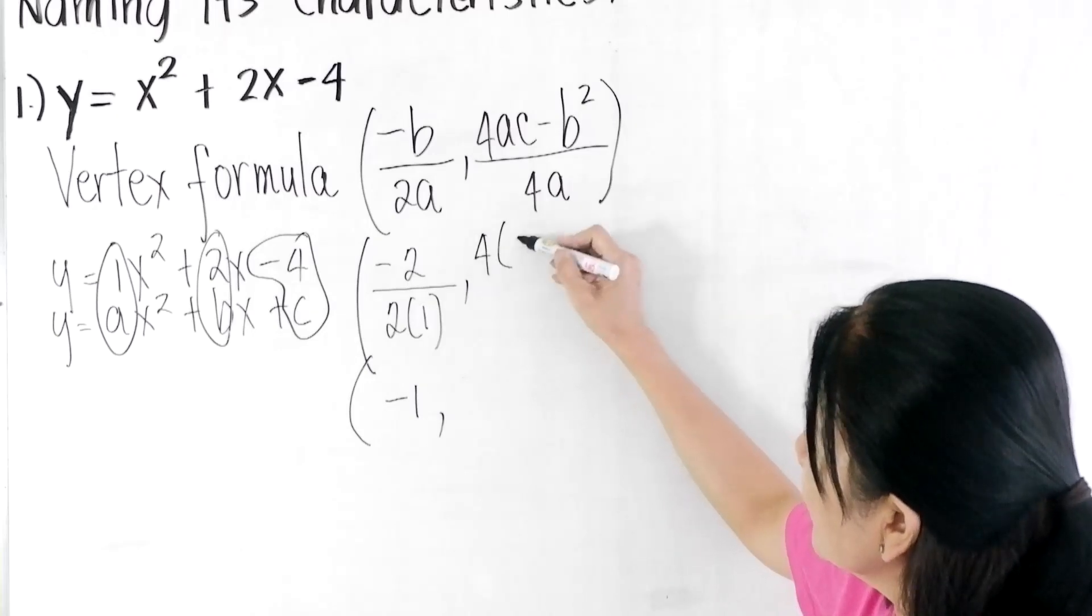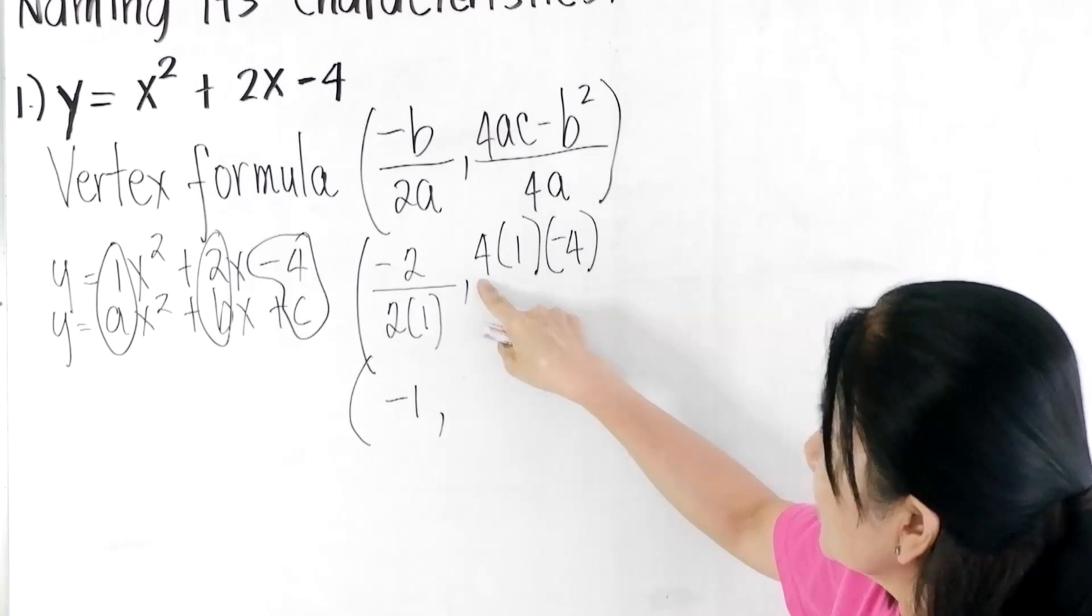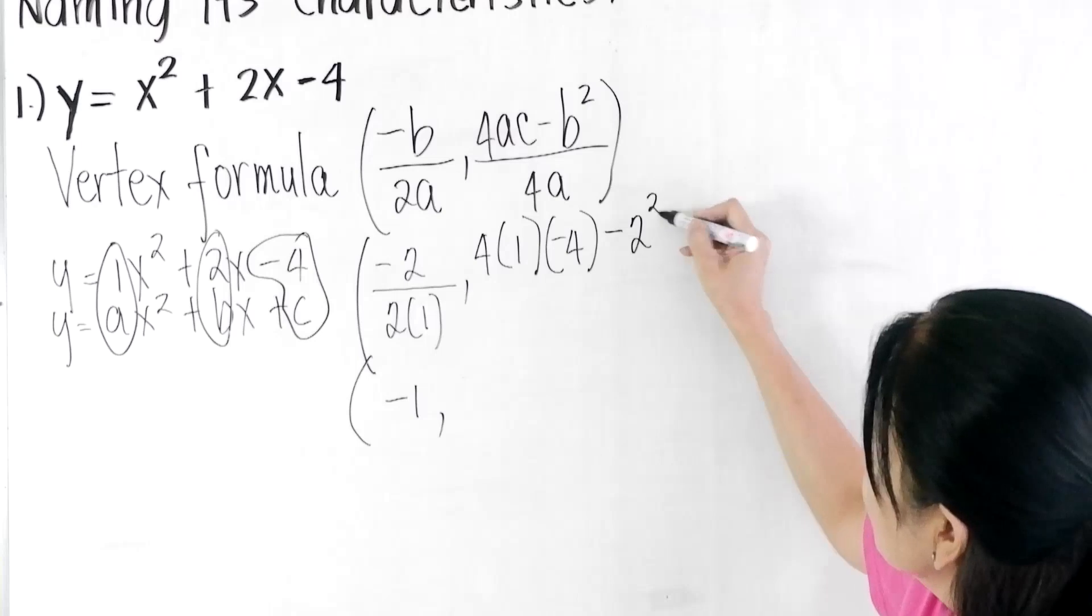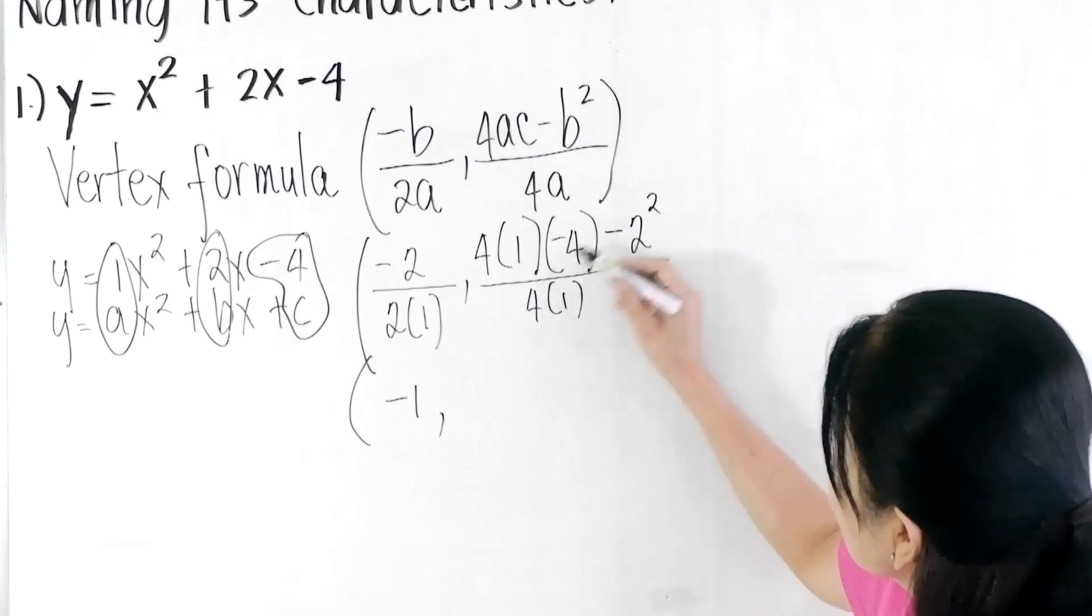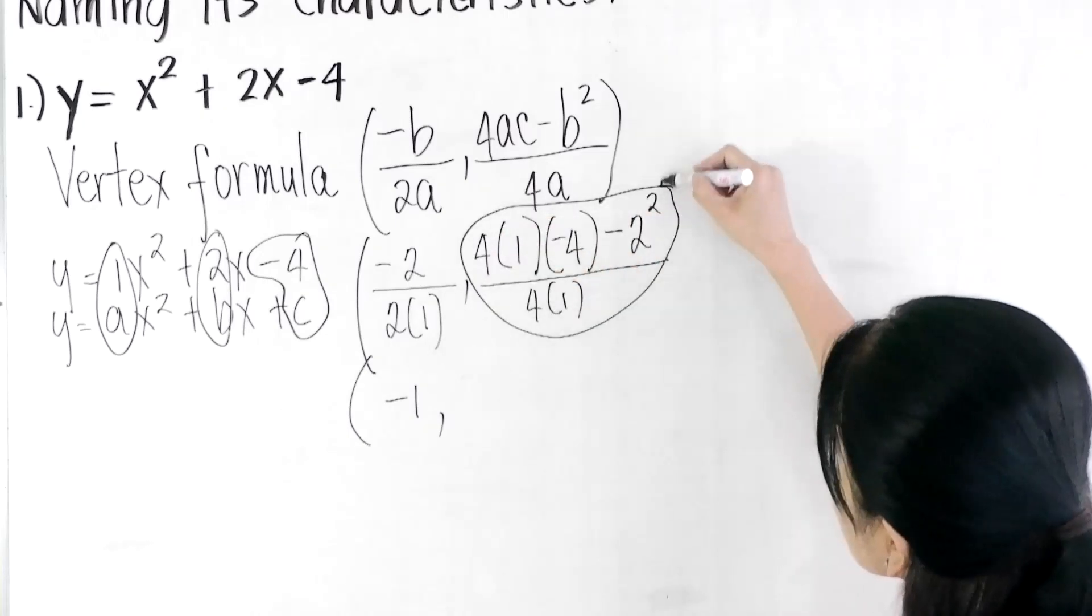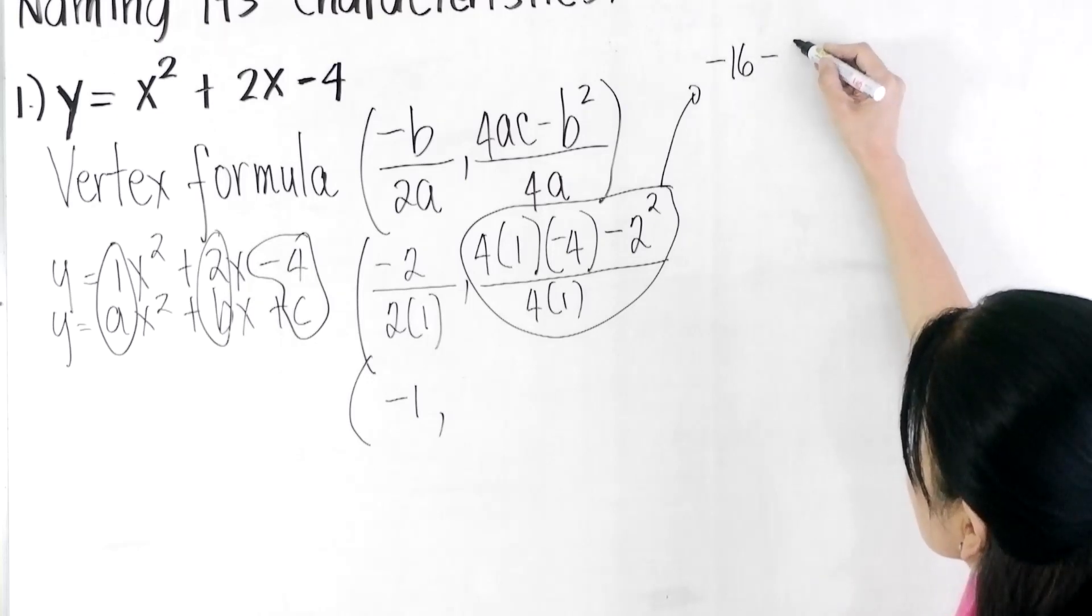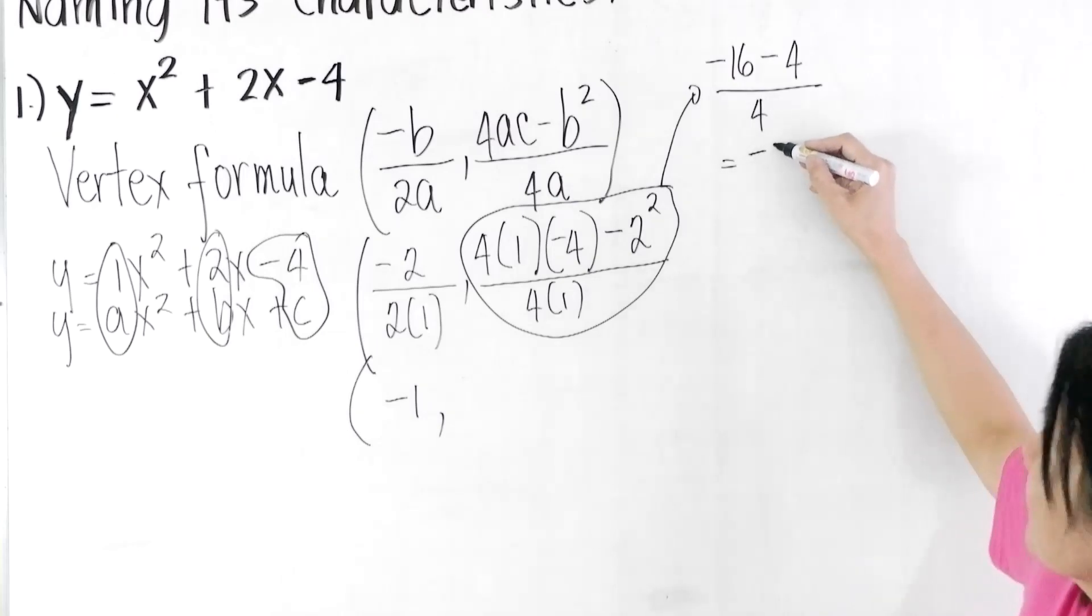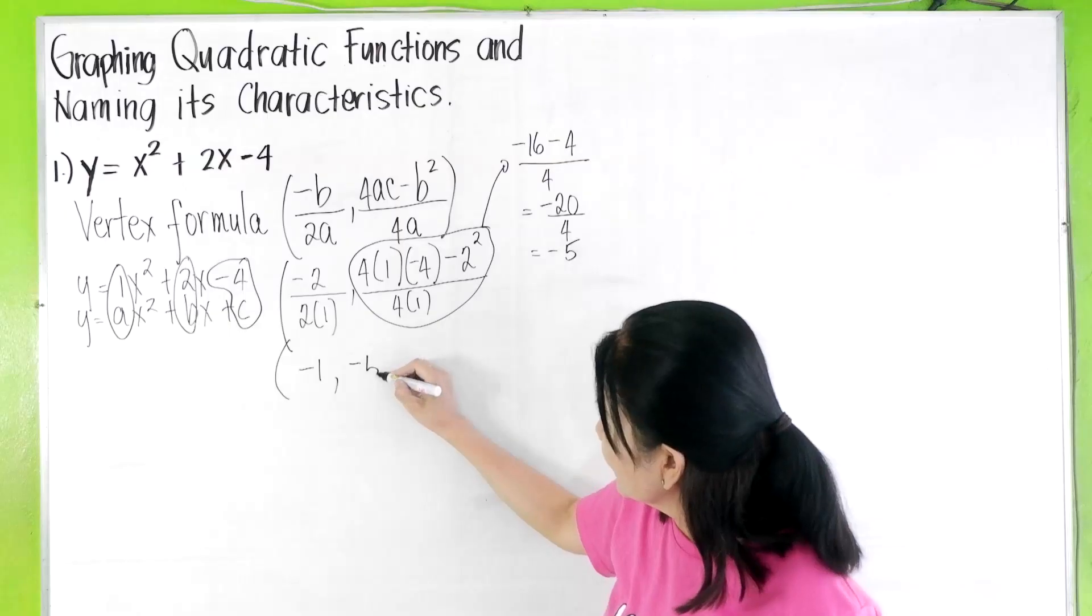4ac, so 4 times a times c minus b² all over 4a. So this gives us -16 - 4, all over 4a, and that is -20 over 4a, or -5.